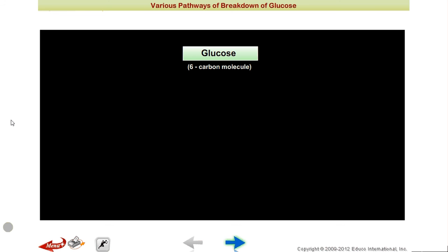We have chosen glucose as our substrate because we know that glucose is breaking down. What are you using? Glucose. Glucose is a 6-carbon molecule. What is the formula? C6H12O6.